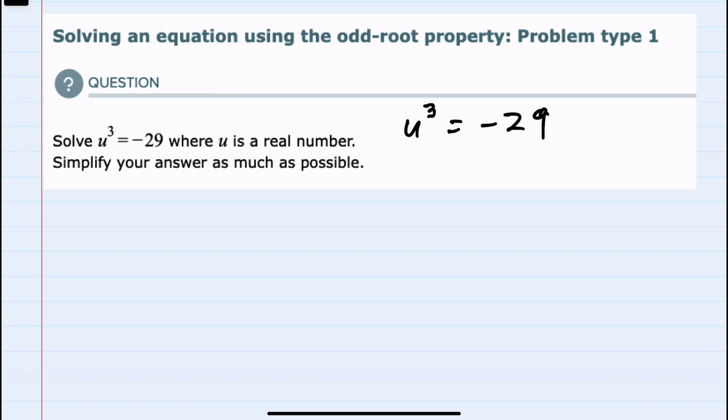To solve this for u, since I have a u cubed and I'm trying to isolate the u, to undo a u cubed I can take the cubed root, and I would of course have to do this on both sides of the equation.